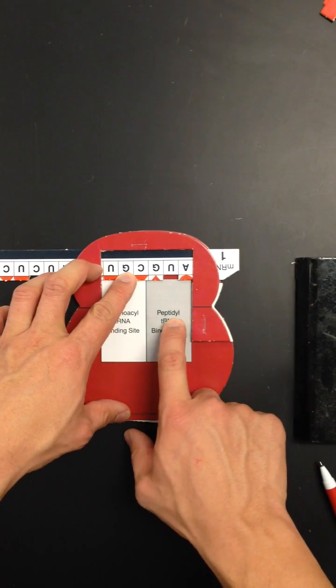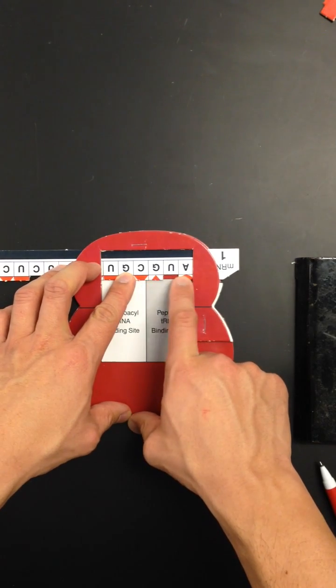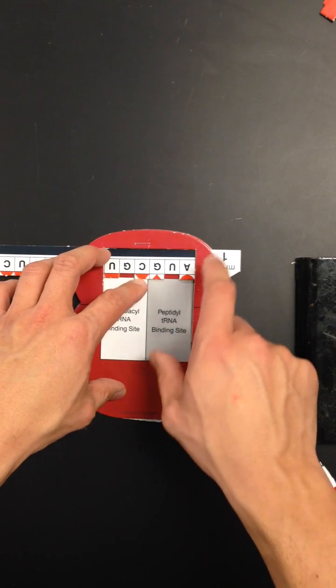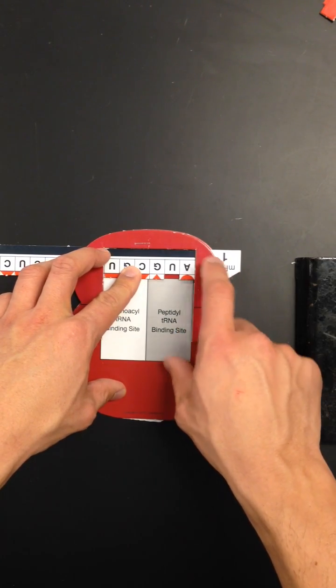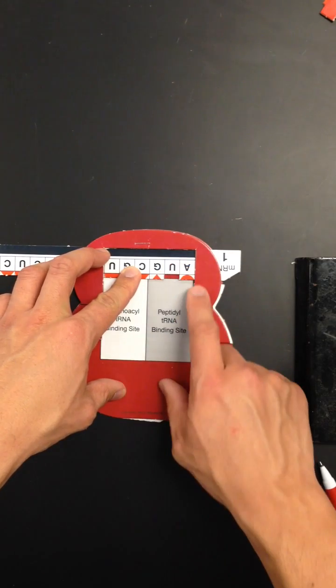When you put your messenger RNA into your ribosome in the first binding site, the peptidyl binding site, you want to make sure there's three bases in there. Because remember, your ribosome reads your messenger RNA in triplet codes, and we call these triplet codes codons.